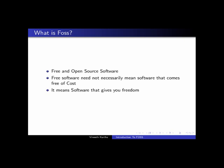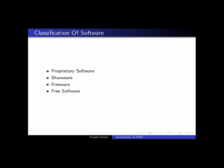Now let's classify software. Software can be classified into four types: proprietary software, shareware, freeware, and free software.